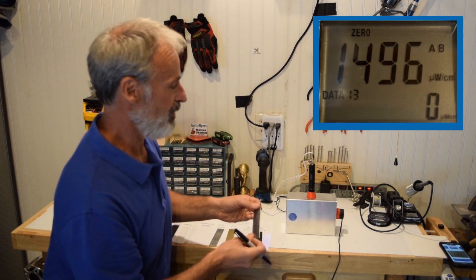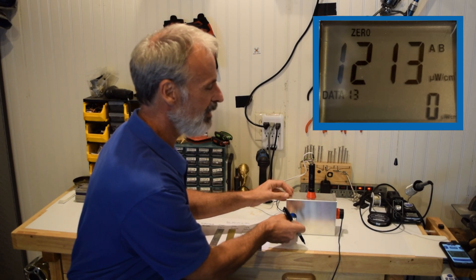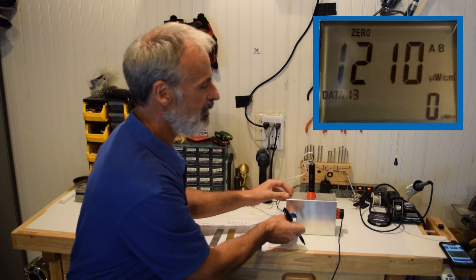And then of course stainless steel, as most of you know, is not very reflective. You can see 1,210.